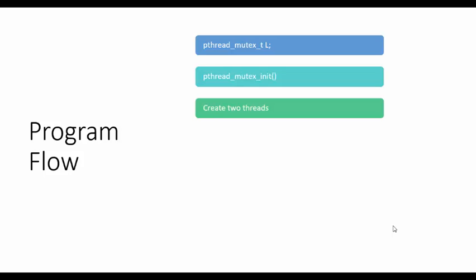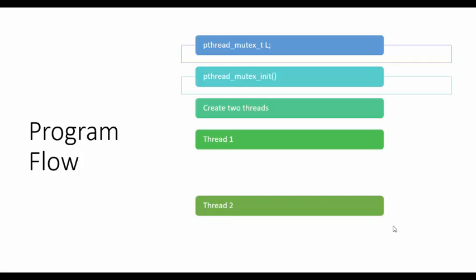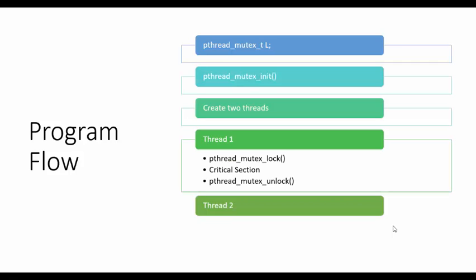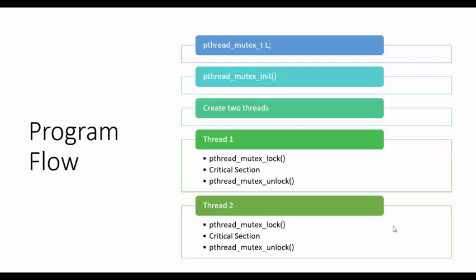Then we are going to create two threads — Thread 1 and Thread 2. Thread 1 will acquire the lock, enter the critical section, and then unlock. Thread 2 will first try to acquire the lock, then enter the critical section, and then unlock.